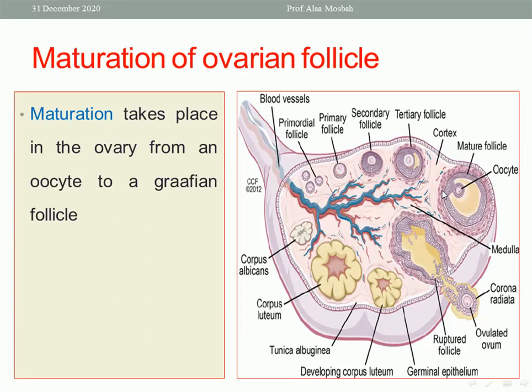Then ovulation happens with the release of the ovum surrounded by the corona radiata. The remaining granulosa and thecal cells form the corpus luteum. If pregnancy occurs, the corpus luteum will continue its function for eight weeks, then atrophies to become the corpus albicans. If no pregnancy occurs, it atrophies within one week.